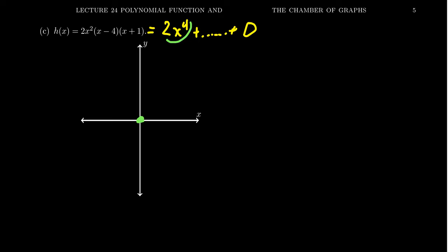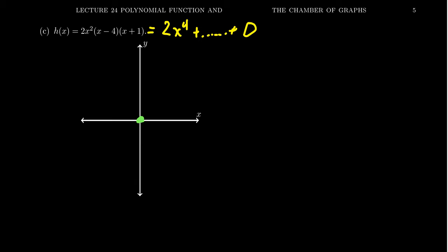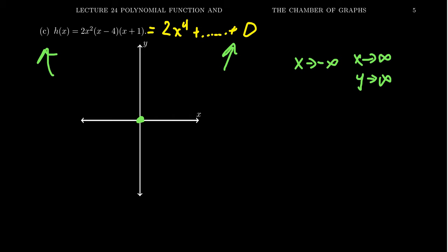Because the leading term is 2x to the fourth, our function is going to have the basic shape of a quartic polynomial — it kind of looks like a parabola, although maybe a little flatter. We only care about the end behavior. On the right-hand side, as x approaches infinity, y will approach infinity. On the left-hand side, it'll also point up because it's an even degree monomial, so as x approaches negative infinity, y will approach infinity still.